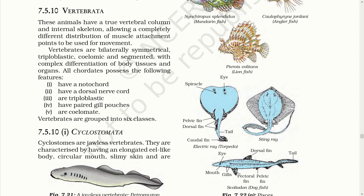Vertebrates. These animals have a true vertebral column and internal skeleton, allowing completely differentiated muscle attachment points for movement. Vertebrates are bilaterally symmetrical, triploblastic, coelomic and segmented with complex differentiation of body tissue and organs. All chordates possess the following features: a notochord, a dorsal nerve cord, they are triploblastic, have paired gill pouches and are coelomate. These are classified into six classes. The most advanced and well-differentiated body design is that of vertebrates, which have a true vertebral column and a dorsal nerve cord.